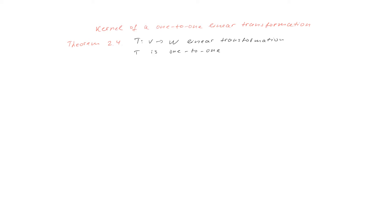This result is formulated in theorem 2.4. It says that if T is a linear transformation, then T can be one-to-one if and only if its kernel consists only of one vector, which is a zero vector.